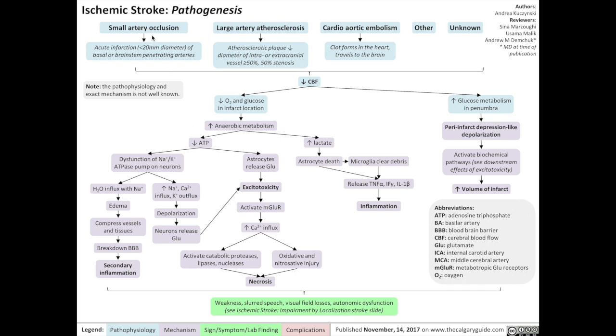Ischemic stroke can be caused by a variety of issues. First, small artery occlusion, which is defined as acute infarction of basal or brainstem penetrating arteries that are less than 20 mm in diameter. Second cause of ischemic stroke is large artery atherosclerosis, which is defined as an atherosclerotic plaque reducing the diameter of intra or extracranial blood vessels by over 50%. The third cause of ischemic stroke is cardioaortic embolism, which is defined as a blood clot that first forms in the heart, for example because of atrial fibrillation, then traveling to the brain via the vasculature. There are also other and unknown causes of ischemic stroke. Note that the pathogenesis of ischemic stroke is not exact and not very well known. However, we do know that each one of these causes will lead to the reduction of cerebral blood flow or CBF.